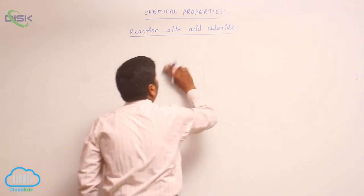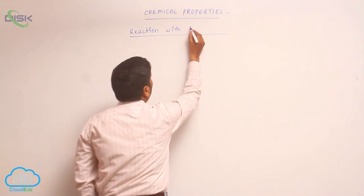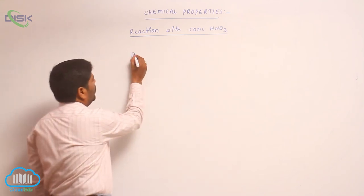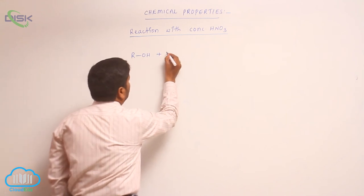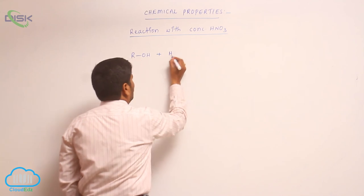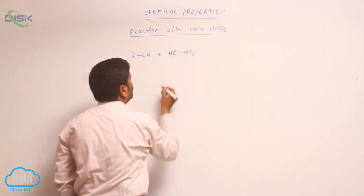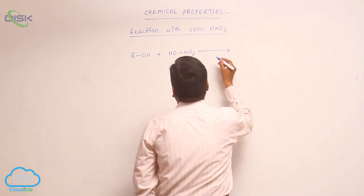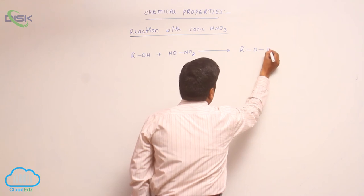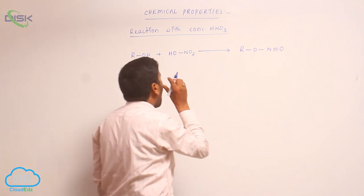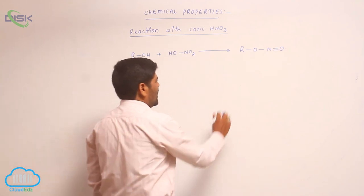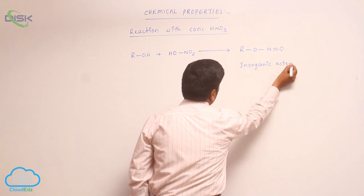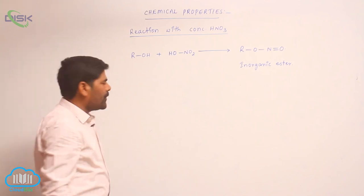Next, reaction with concentrated nitric acid. When an alcohol reacts with concentrated nitric acid (HNO3), loss of a water molecule takes place, and it forms R-O-N(=O)2, which is known as an inorganic ester. This inorganic ester is thus formed.